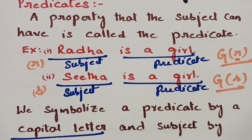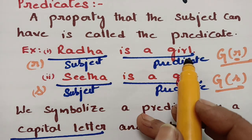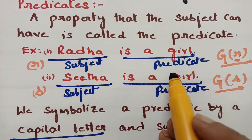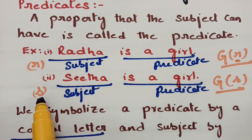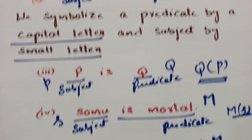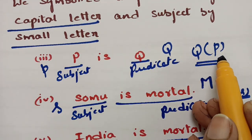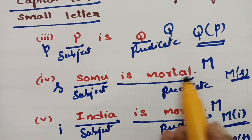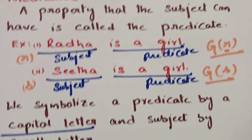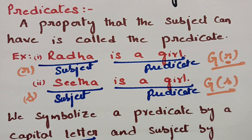To summarize: the predicate is the property of the subject. Radha is the subject, 'is a girl' is the predicate — G(r). Sita is a girl — G(s). P is Q — Q(p). Somu is mortal — M(s). India is mortal — M(i). A table is mortal — M(t).